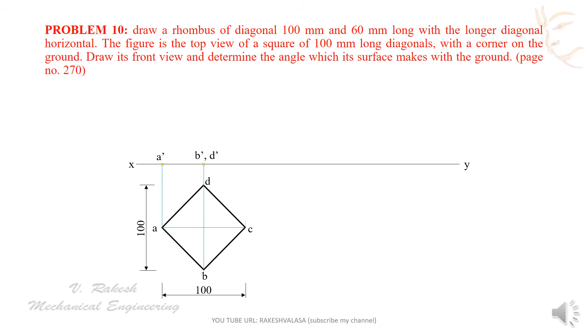From C, that is C dash. Next, join A dash, B dash, D dash, C dash. That is the first front view.